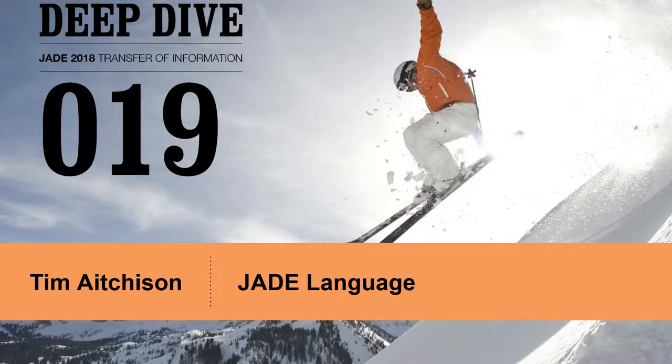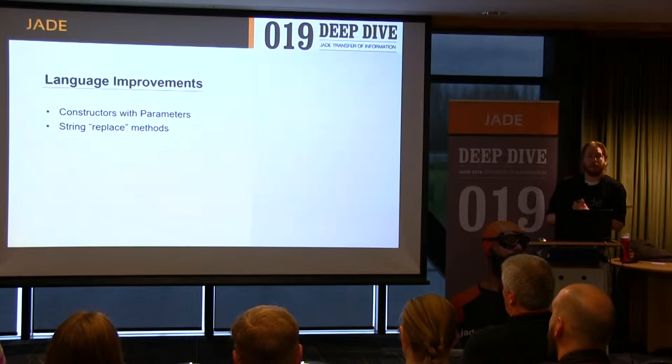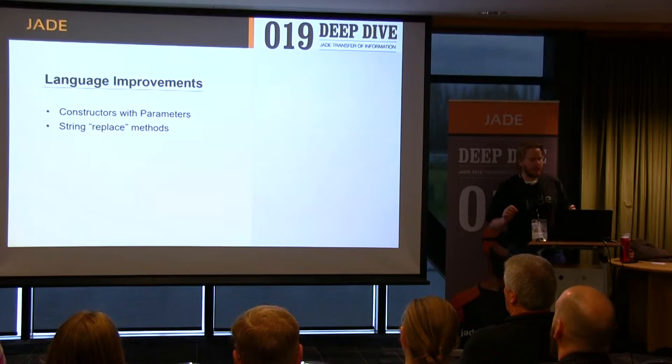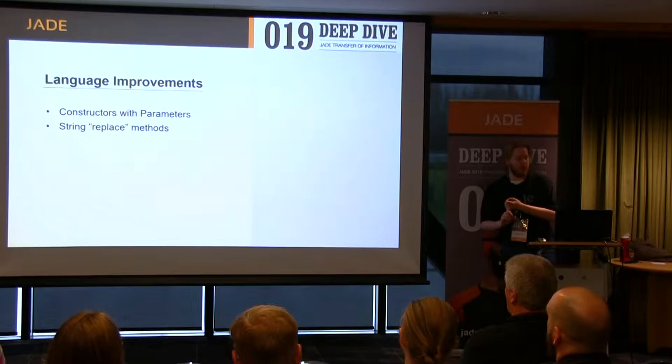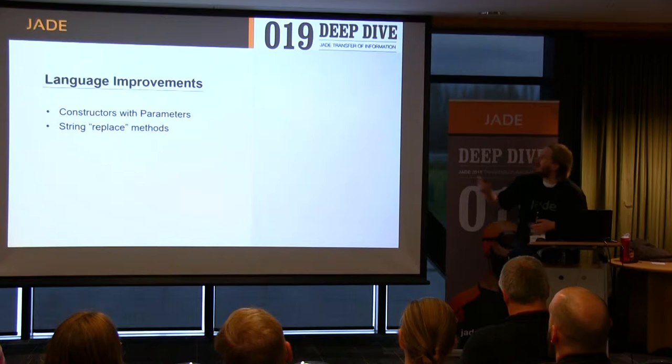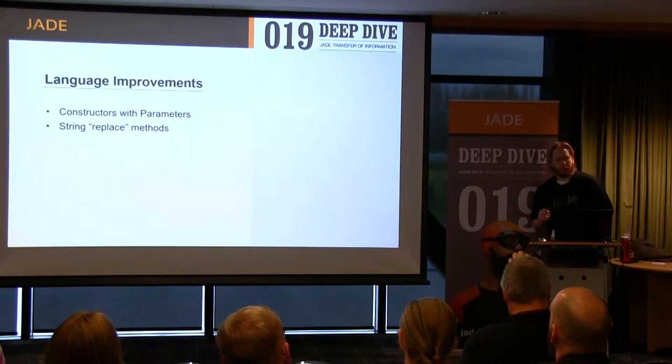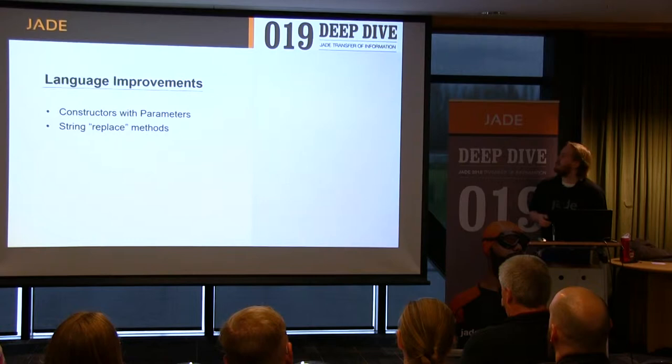So first up, the Jade language. We're going to start with some language features — not a huge amount in this section today. We've basically got one bigger feature and one smaller feature. The first one is you can now pass parameters to create methods, i.e. construct with parameters. We've also got a couple of useful new methods added to the string primitive type — replace methods. That's the little one.